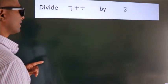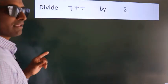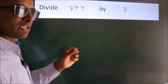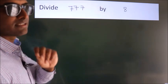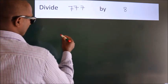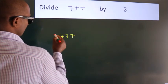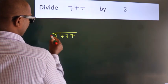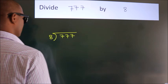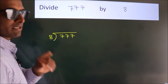Divide 777 by 8. To do this division, we should frame it in this way. 777 here, 8 here. This is your step 1.